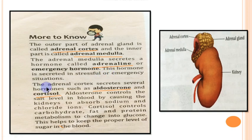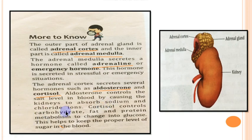The adrenal cortex secretes several hormones such as aldosterone and cortisol. Aldosterone is a mineralocorticoid that maintains salt levels in the blood by helping to absorb sodium and chloride ions from the kidney. Cortisol is a glucocorticoid that controls carbohydrate, fat, and protein metabolism, and increases the glucose level in the blood, maintaining blood sugar.